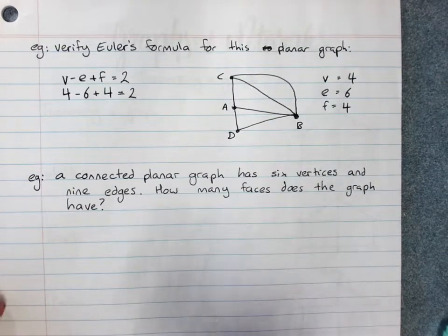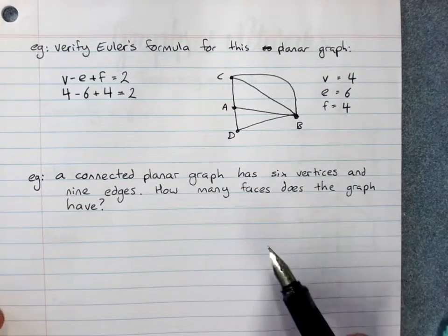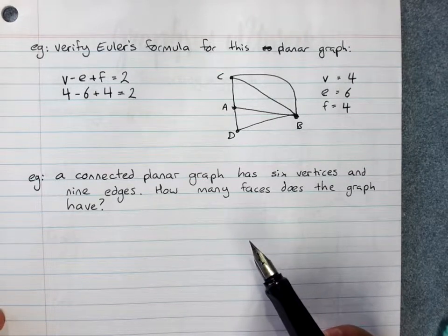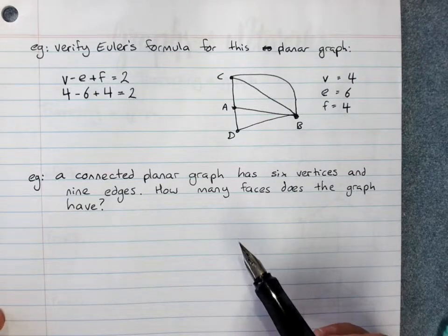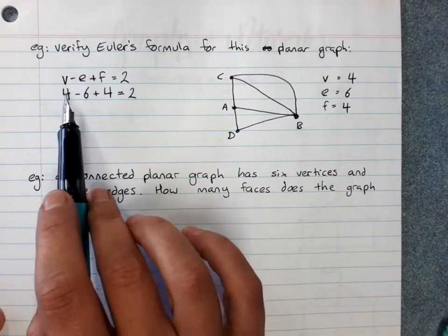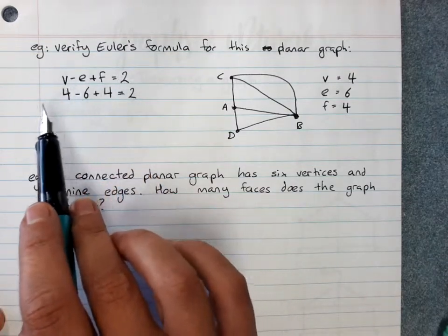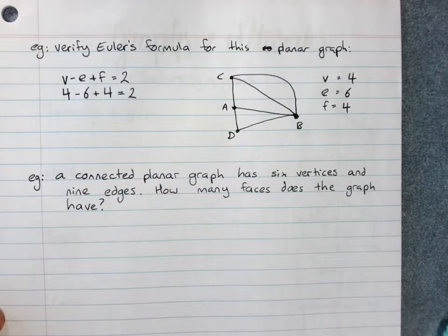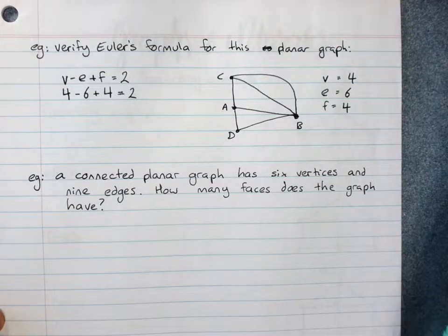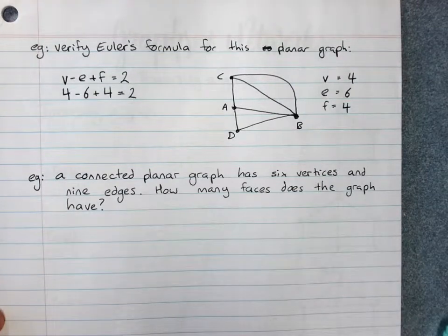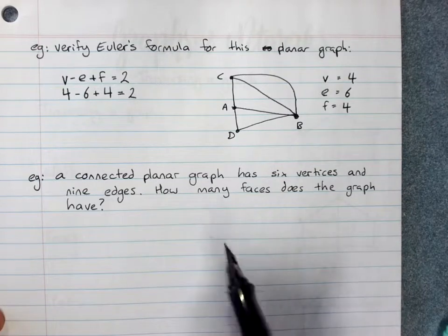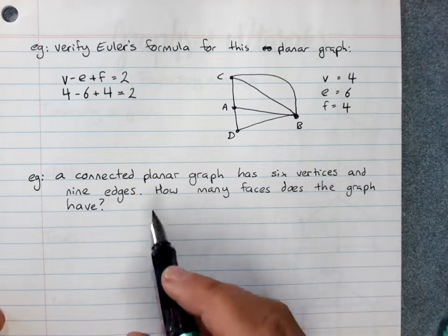Euler's formula is useful for a variety of things. One, you can use it to double check that a described graph is planar, because if a connected graph follows that rule, it is planar. And you can also use it to find out the number of faces or vertices or edges given the other two.